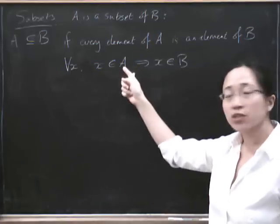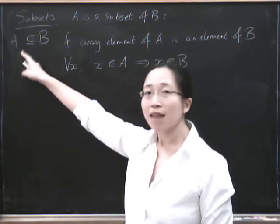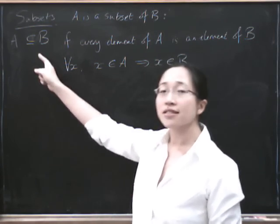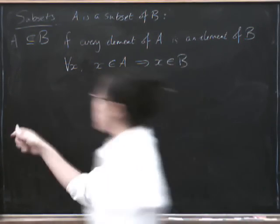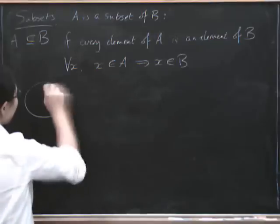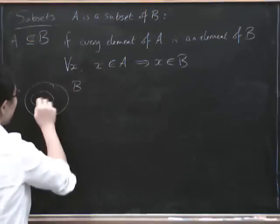What does it mean for that not to be true? It means that there's got to be some element of A that isn't inside B. So if we draw a little picture of it, if this is B and that's A.